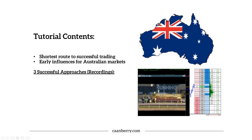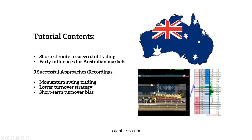Then we're going to get stuck into the important part that probably most of you are here for: the three successful approaches to trading Australian horse racing markets, with lots of on-screen recordings and examples talking you through myself doing stuff on screen and why I'm doing it. Those three are broken down into momentum swing trading, lower turnover strategy, and short-term turnover bias.